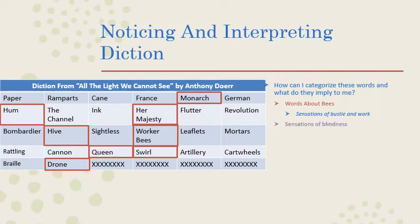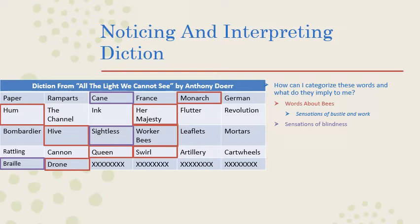Another category I noticed was words that implied the sensation of blindness — those are in purple. I chose cane, sightless, and braille. I looked at those and said this might tell me something about a character in the reading, that possibly a character will be unable to see, or that it could be symbolically talking about — since we're talking about possibly a hive of people — that these people are blind to something, unable to perceive something.